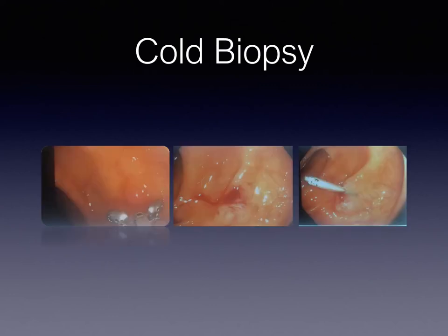These images demonstrate a cold biopsy for polyp removal and a hemostatic clip placement. In the photograph on the left, the biopsy devices are angled toward the mucosal polyp. The polyp is removed and after removal, there is a small area of bleeding. A hemostatic clip is applied and the procedure is complete.